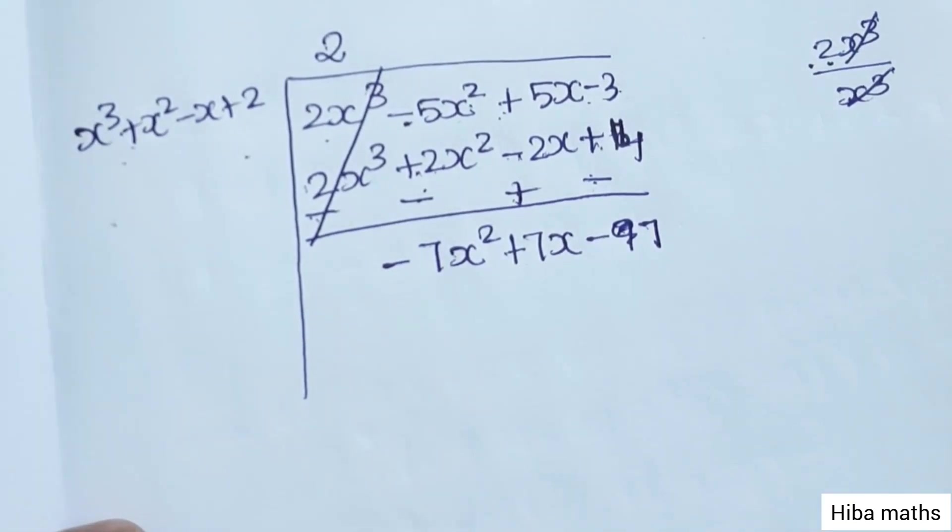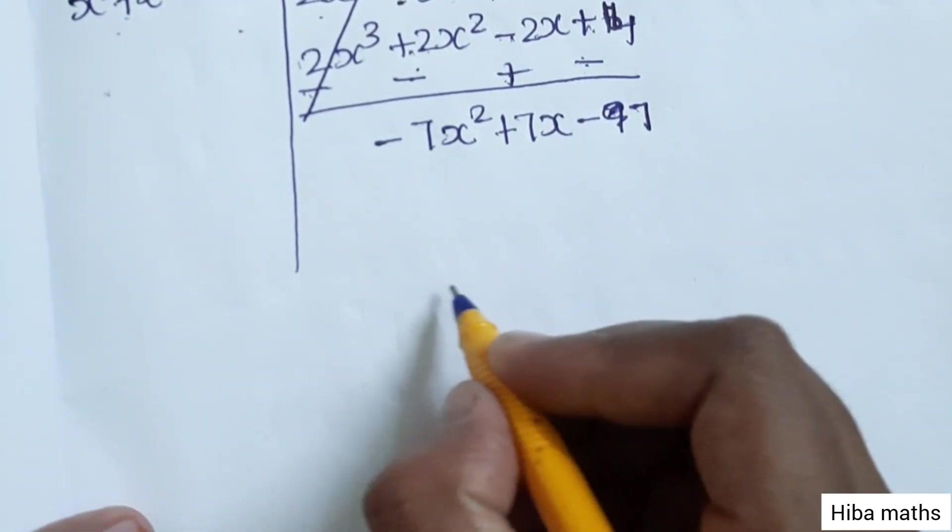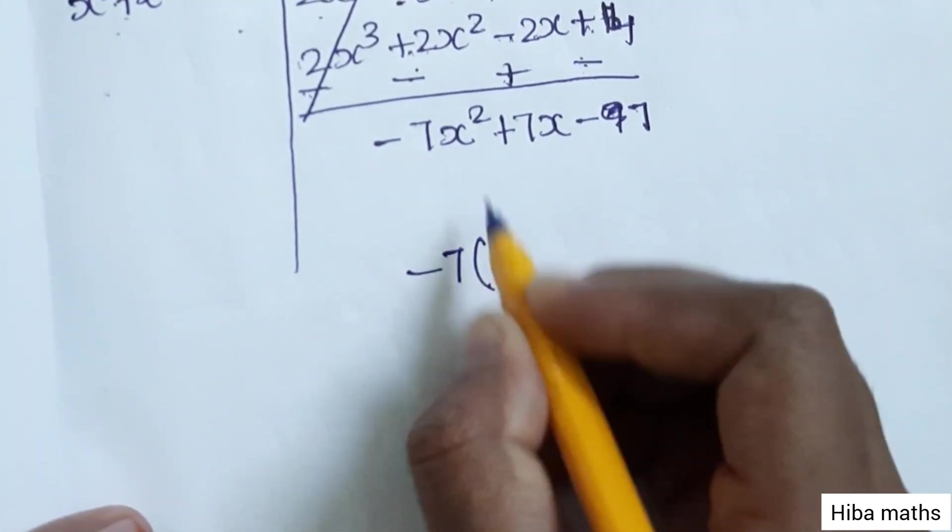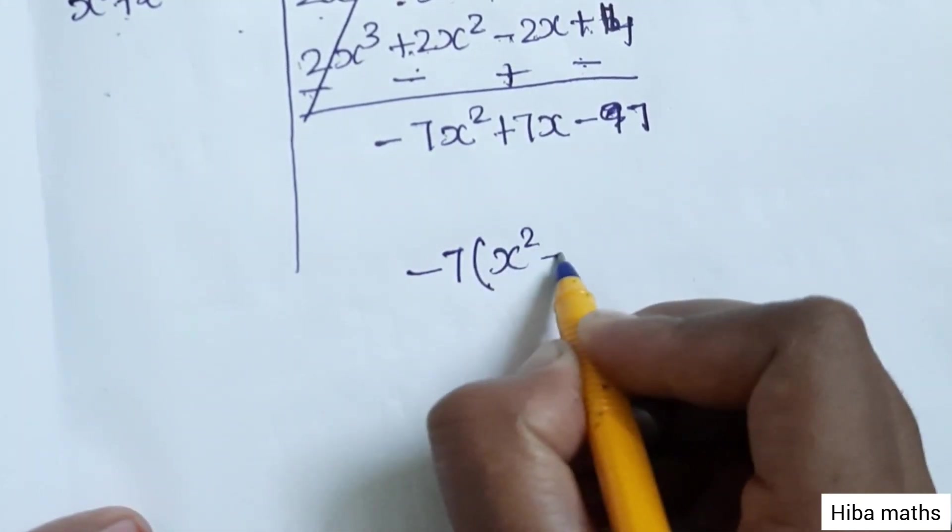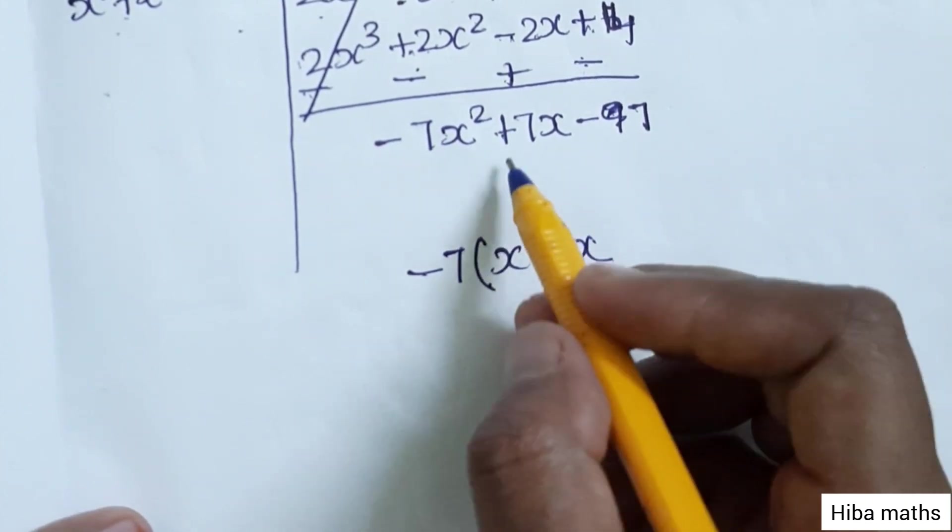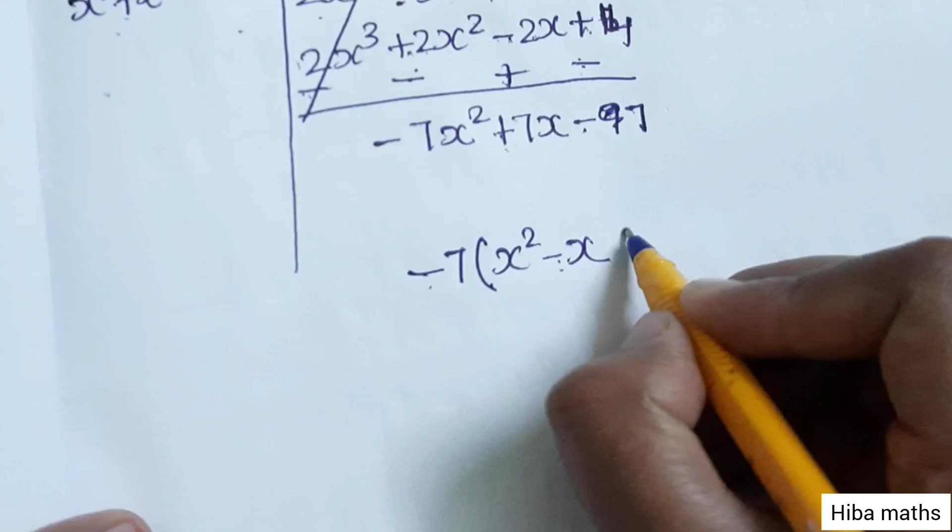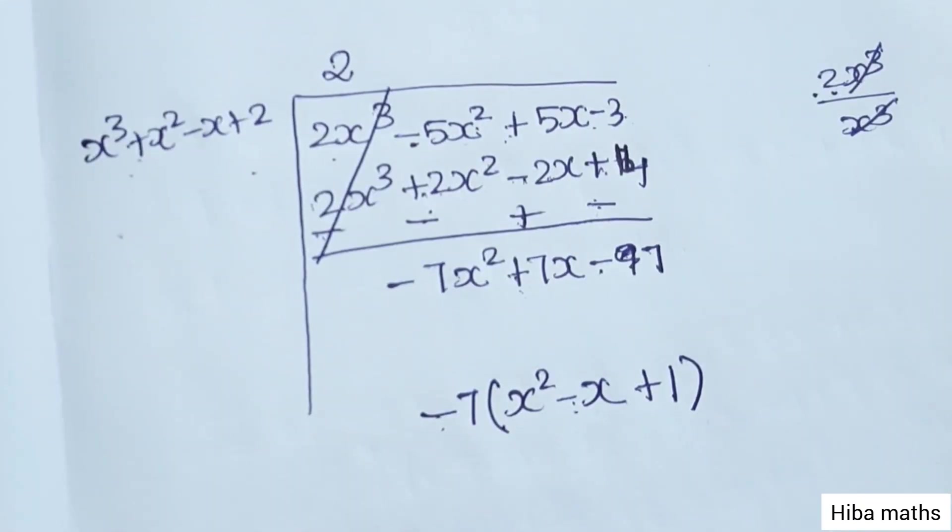Here we can see 7, 7, 7, so factoring out minus 7 gives minus 7 times (x² - x + 1).